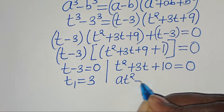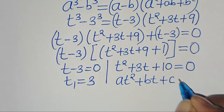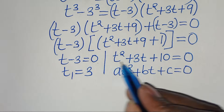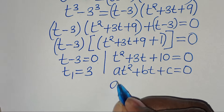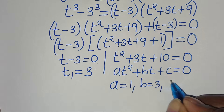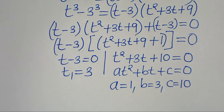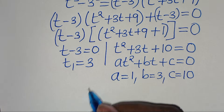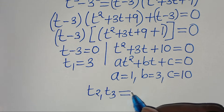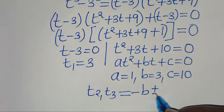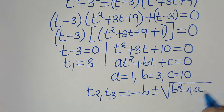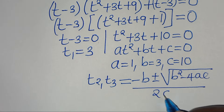The second part is a quadratic equation of the form at² + bt + c = 0. We have a = 1, b = 3, and c = 10. To solve for t₂ and t₃ we apply the quadratic formula: minus b plus or minus the square root of b² minus 4ac, all divided by 2a.